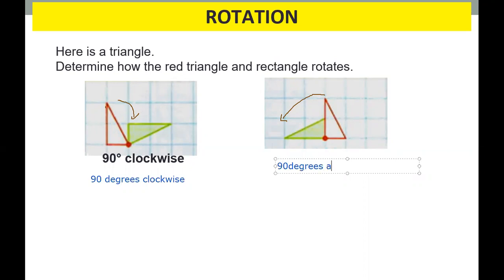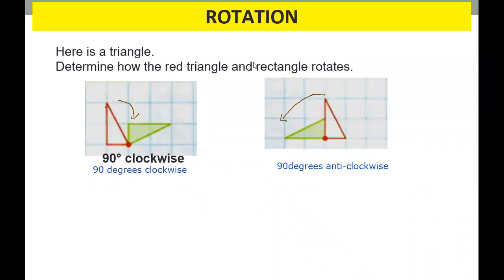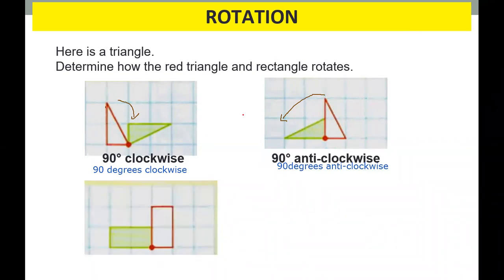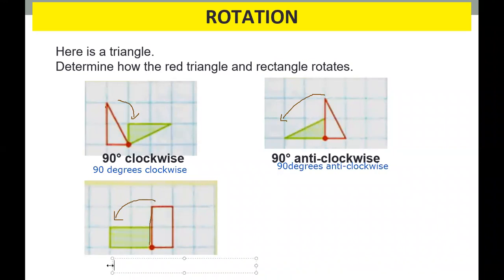Anti. How about this one? This is our original point, our original position — this is the rectangle. It went this way. So it will be 90 degrees anti-clockwise.